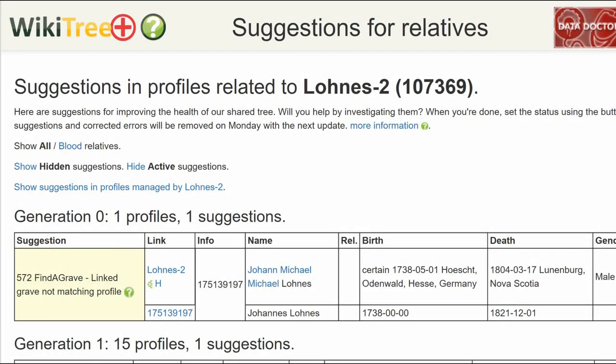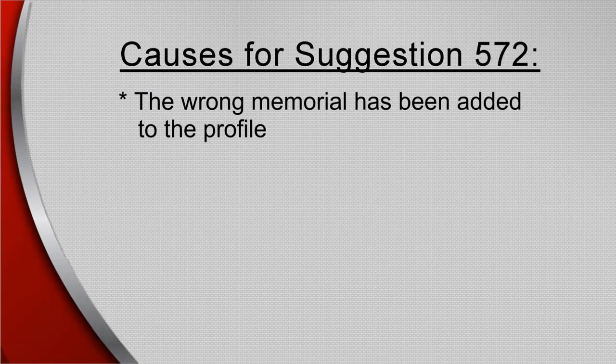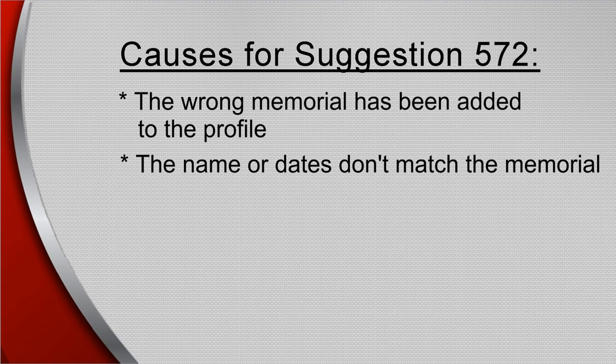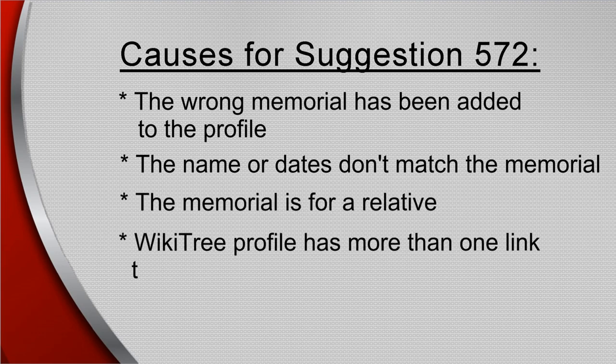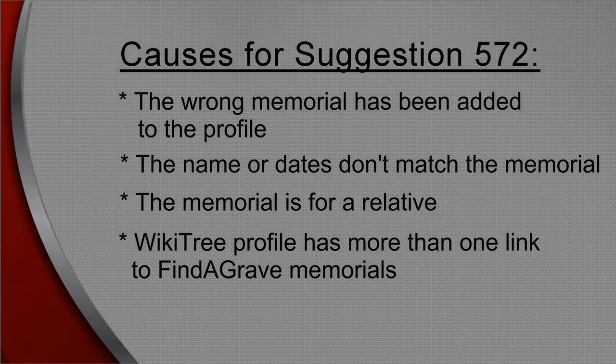Suggestion 572 is triggered when the most likely memorial referenced on the profile does not match the profile closely enough. It has several causes: the wrong memorial has been added to the profile — be sure it doesn't belong to a relative before removing it — the name or dates don't match the memorial even though it belongs to the profiled person, the memorial is for a relative, or the WikiTree profile has more than one link to Find a Grave memorials.